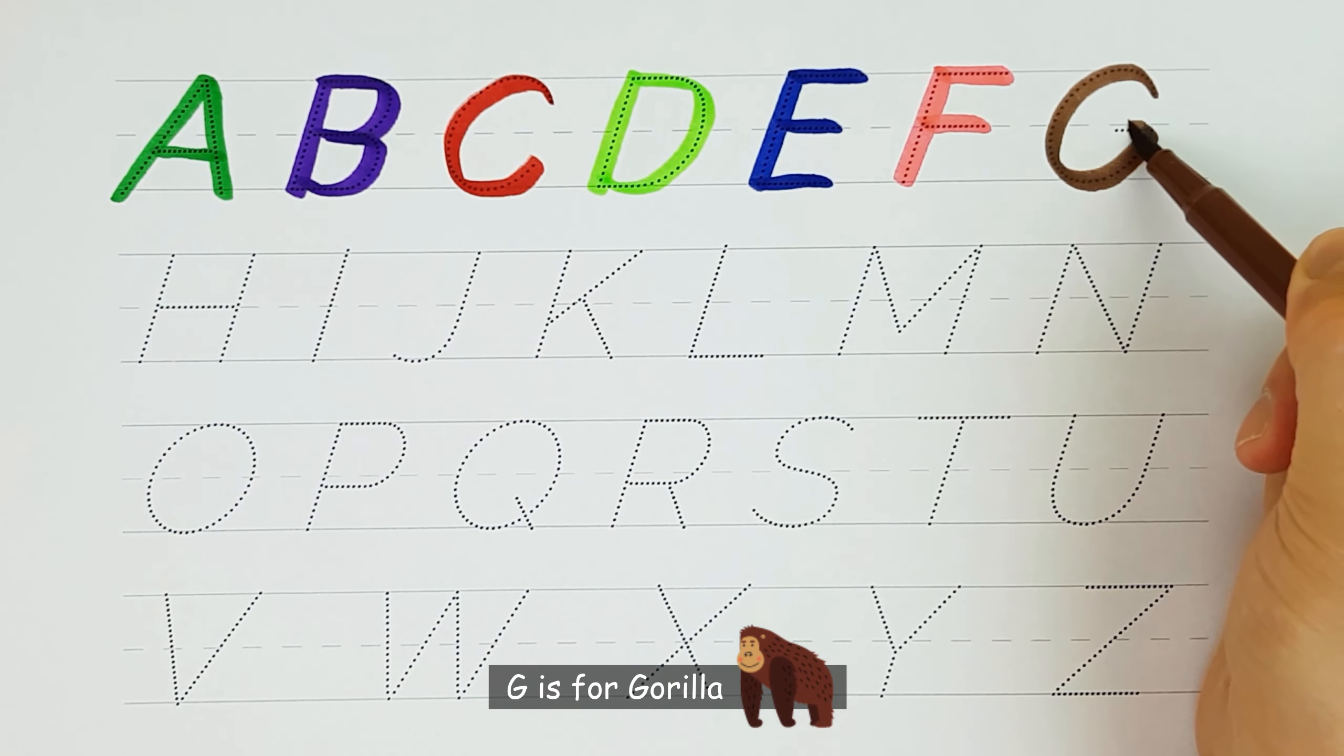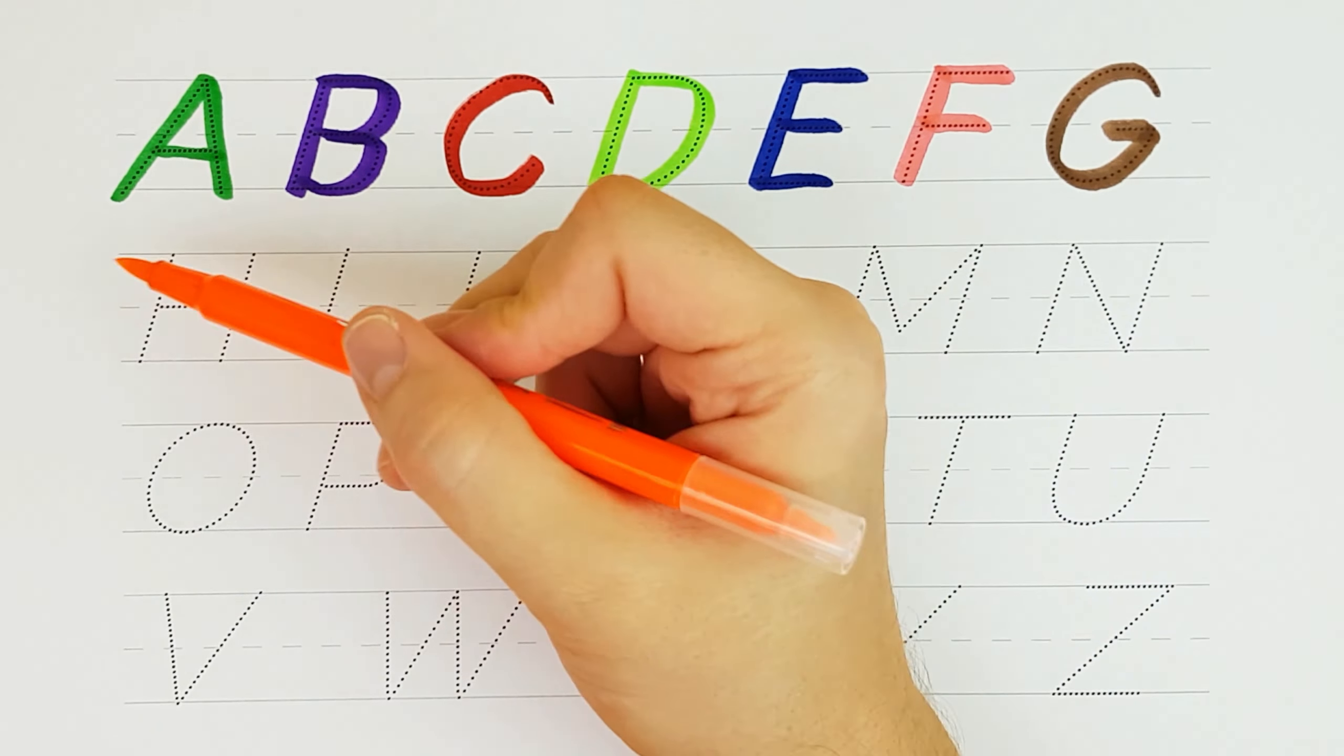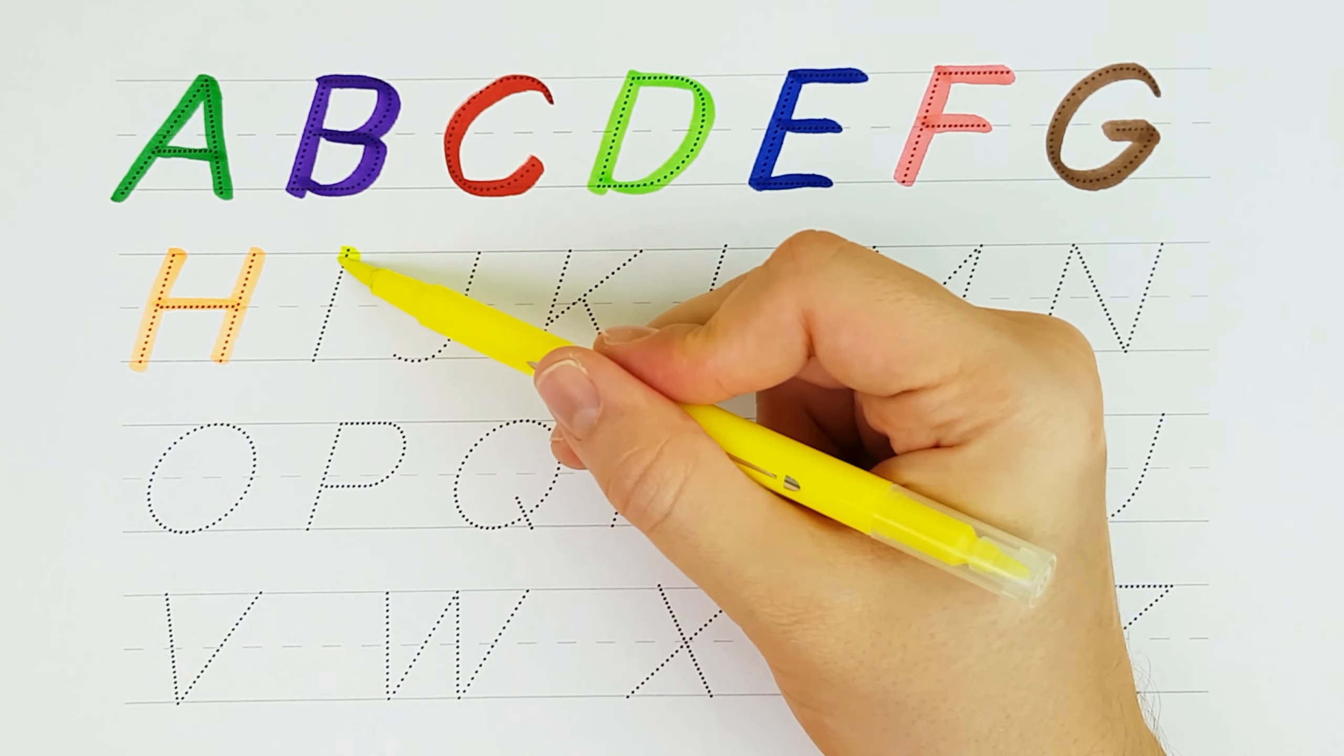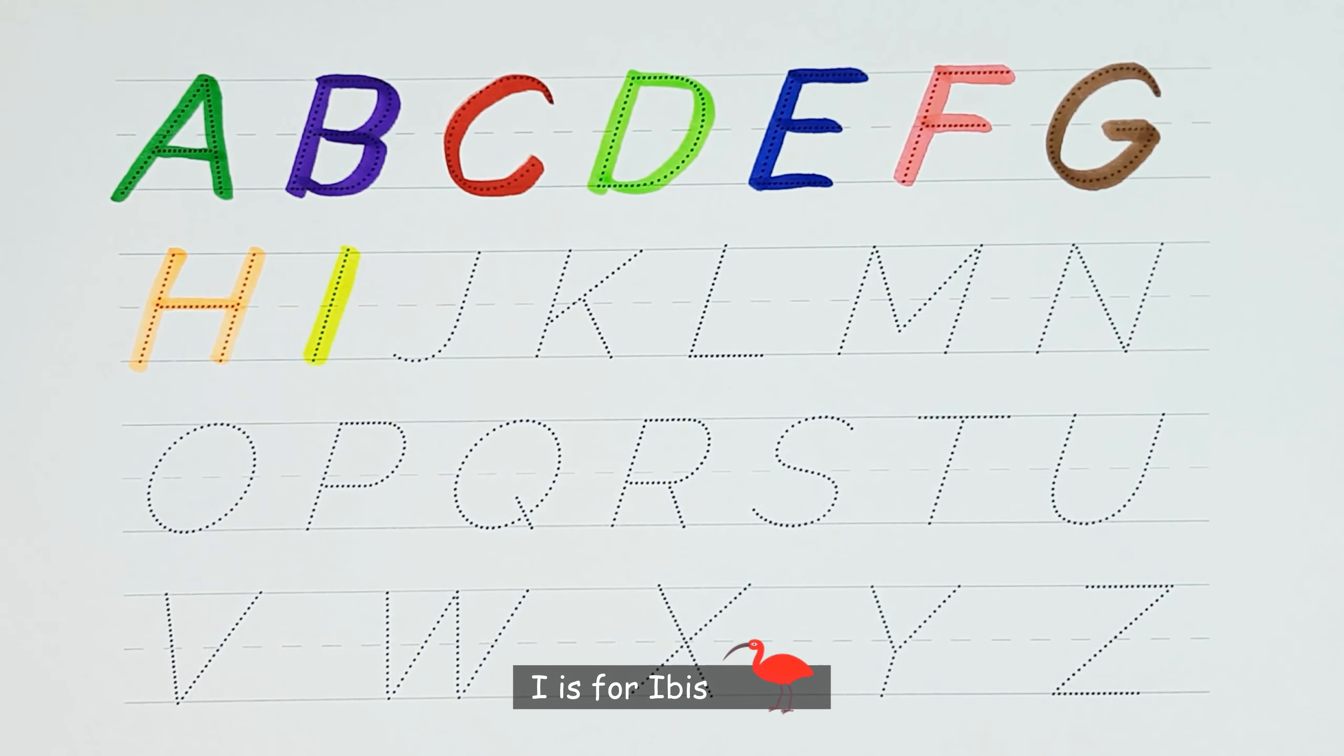G. G is for Gorilla. H. H is for Hedgehog. I. I is for Ibis.